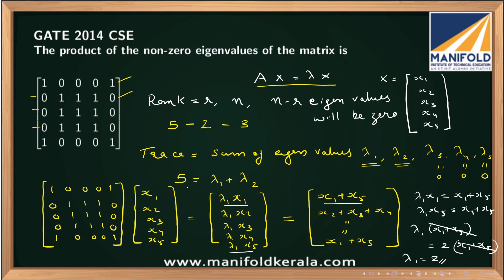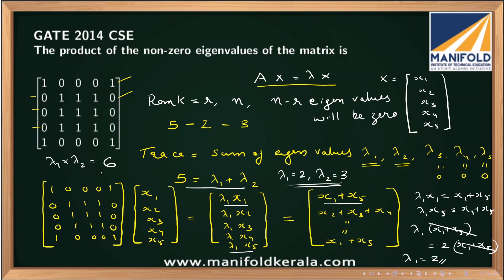Since λ1 = 2 and λ1 + λ2 = 5, we get λ2 = 3. Therefore, the product of the non-zero eigenvalues is λ1 × λ2 = 2 × 3 = 6. That is the correct answer for this question.